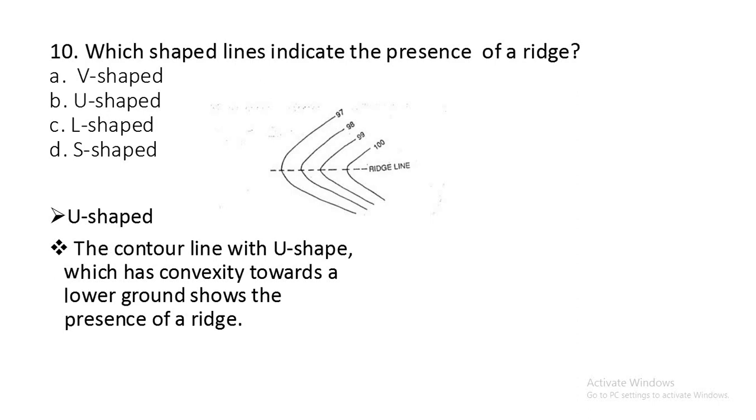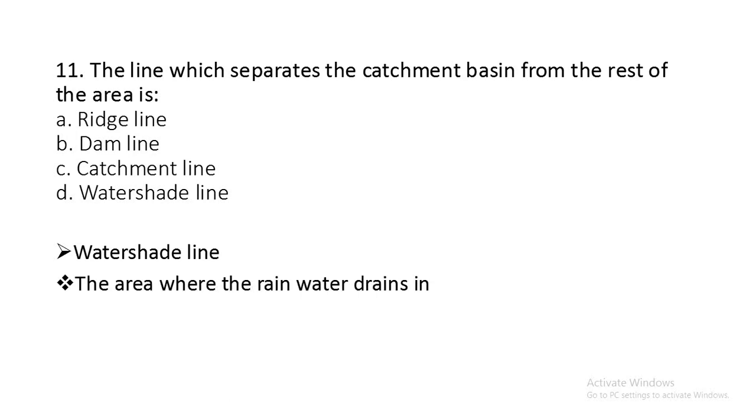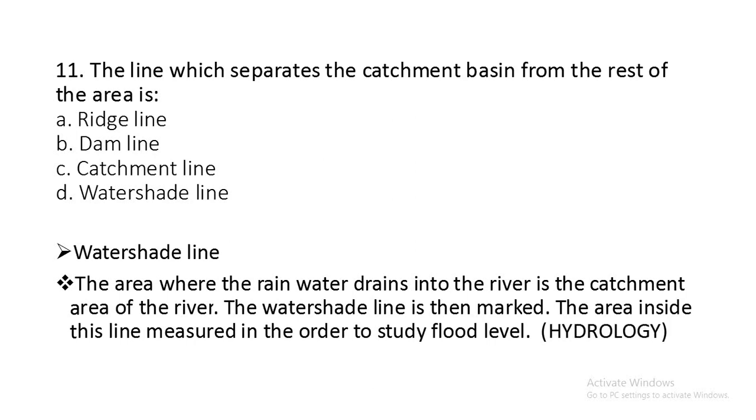Question number eleven: The line which separates the catchment basin from the rest of the area is ridge line, dam line, catchment line, or watershed line? It is watershed line. The area where the rainwater drains into the river is the catchment area of the river. The watershed line is then marked. The area inside this line is measured in order to study flood level. It is generally used in hydrology to study the flood level.